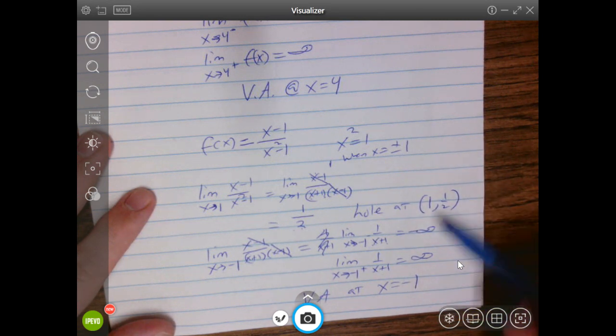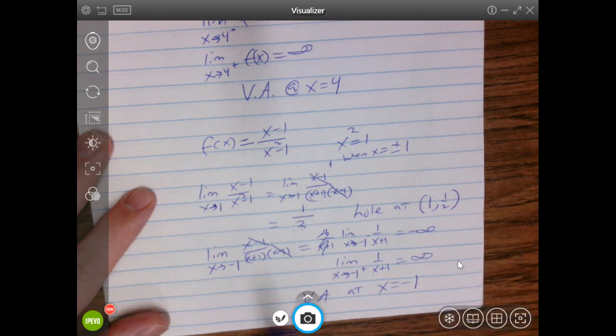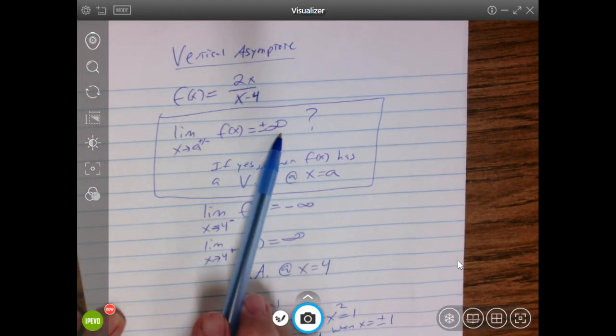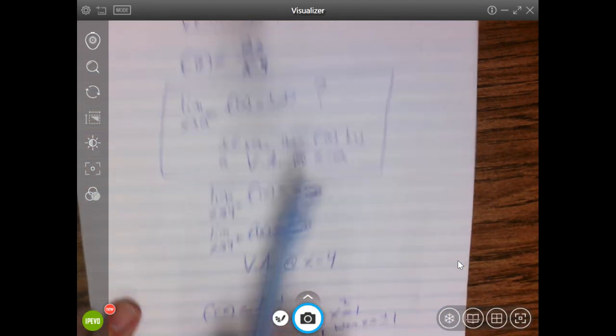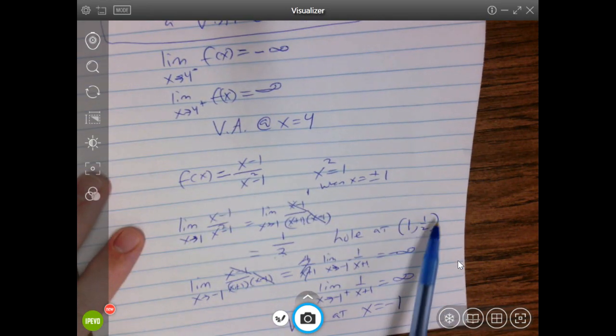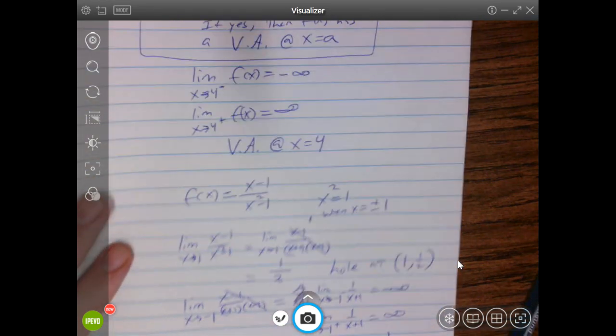You might say, but why aren't they the same, why aren't they both asymptotes? Because again, you have to have an infinite limit to be a vertical asymptote. This is not an infinite limit. It's a limit of 1 half. What does that look like in the graph?